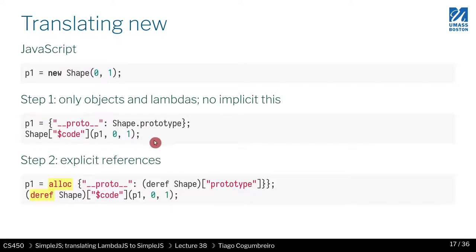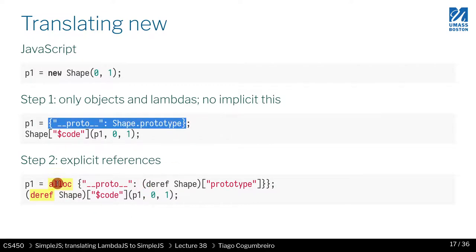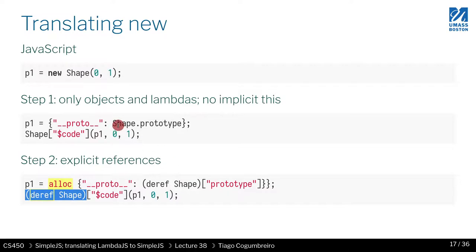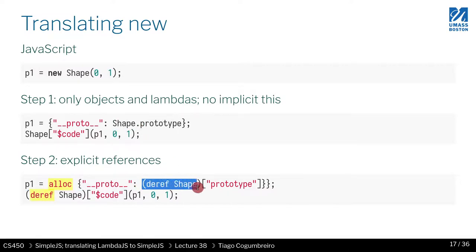If we want to use memory, we're allocating again because this is a new object. And because we want to read the object contained in memory, we need to do "dref" — dref is reading from memory, similar to a heap get. So whenever you're doing shape.something, you need to do dref.